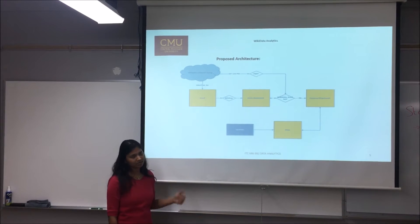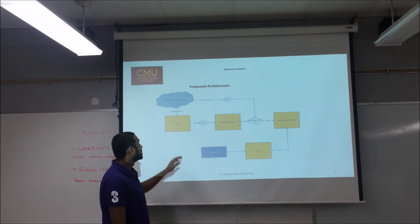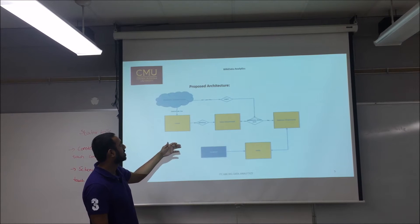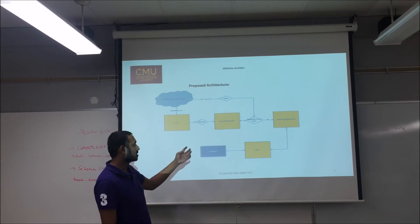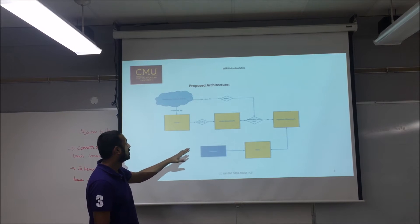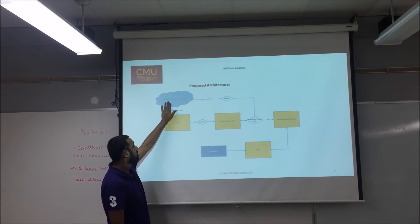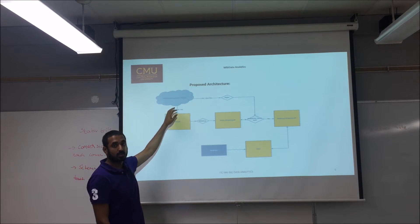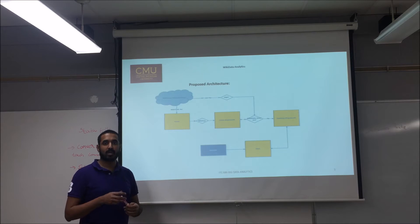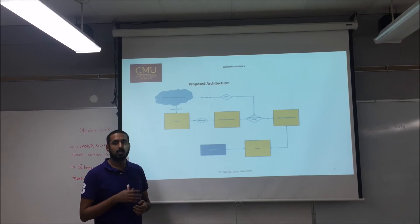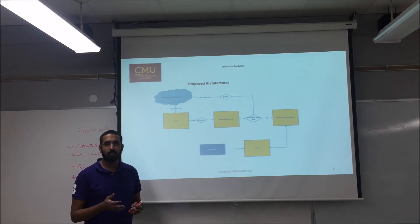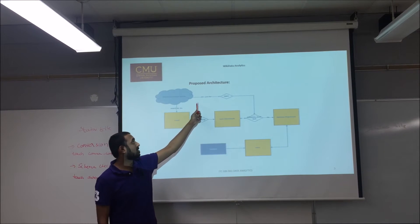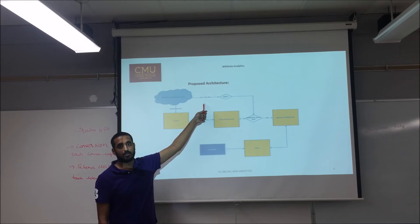This will be explained by Suhas. Hello everyone. This is a very high-level architecture of data storage and how we are going to retrieve queries. This is the Wikidata dump site. We have both formats — URLs and files — so we will be using normal download for the XML and HTML files, and for the JSON files we will be directly using wget.